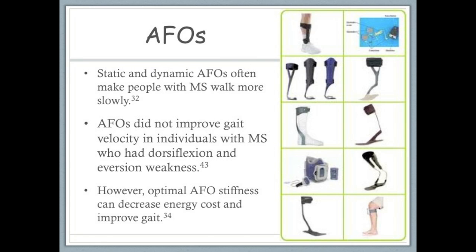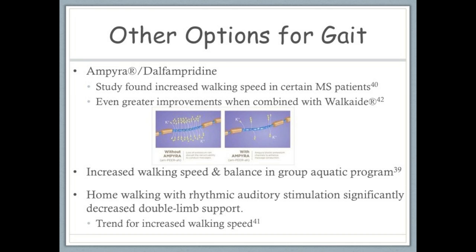Static and dynamic AFOs often make people with MS walk more slowly. Another study found that AFOs did not improve gait velocity in individuals with MS who had dorsiflexion and eversion weakness. However, one study found that optimal AFO stiffness can decrease energy cost of gait and improve gait mechanics. Ampyra is a medication that is indicated to increase walking speed in people with MS. The research suggests that there are two groups of MS patients when it comes to Ampyra: responders and non-responders. Although the criteria for these two groups has not been determined, patients who are responders and take Ampyra might be able to make great gains in gait parameters during physical therapy intervention.